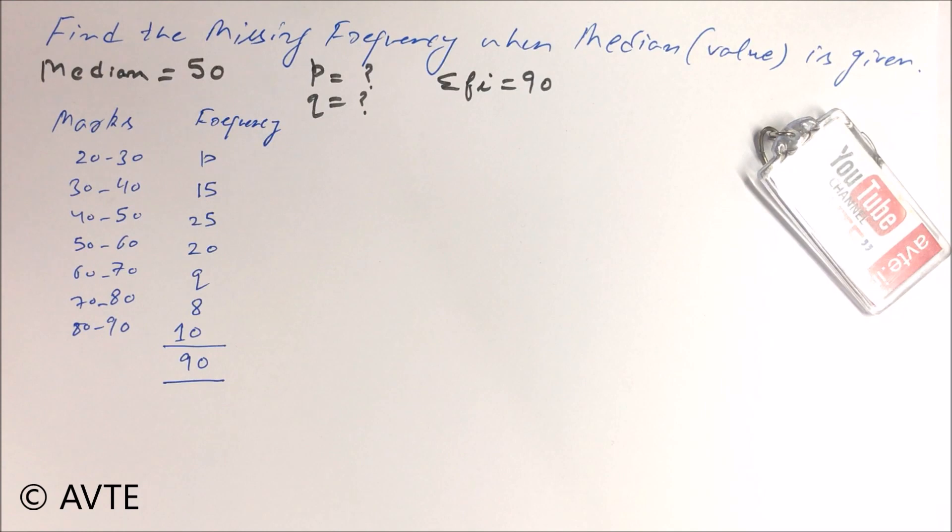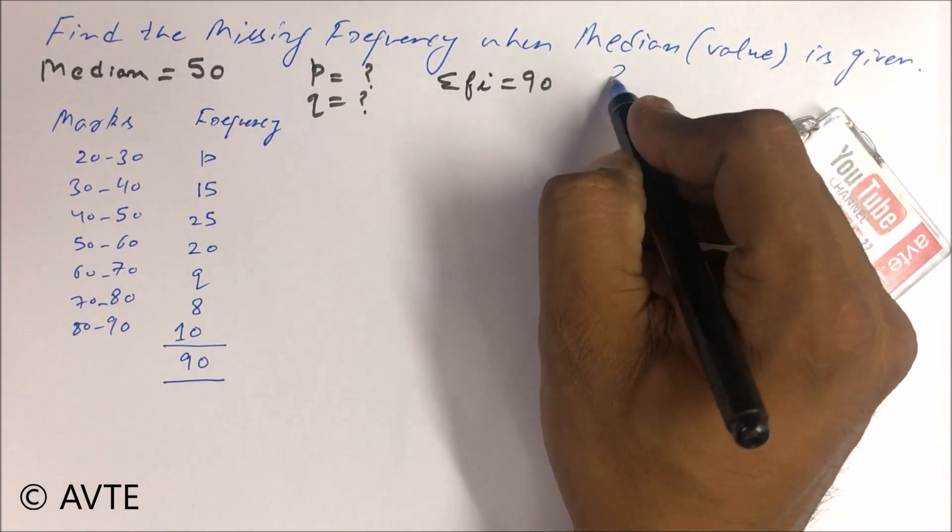Hello friends, welcome to the channel AVTE. In this video we are doing the question on missing frequency of the chapter statistics and probability in NCERT exemplar. This is question number nine of last exercise.